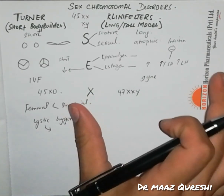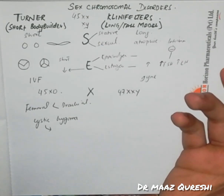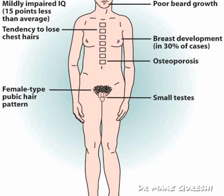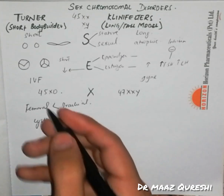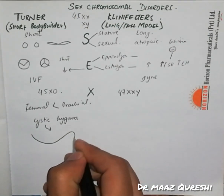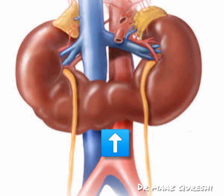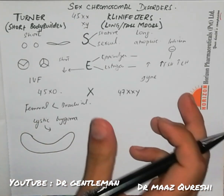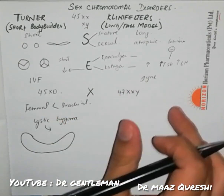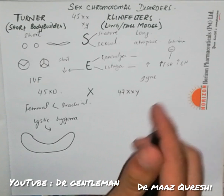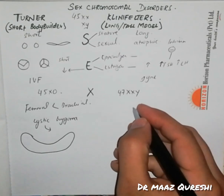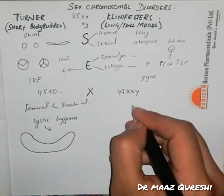In Klinefelter's, there is female hair distribution — facial hair would be less. In Turner's, there are horseshoe kidneys, where the right and left kidneys are joined together, shaped like a horseshoe. There is also a short fourth metacarpal or carpal joint.